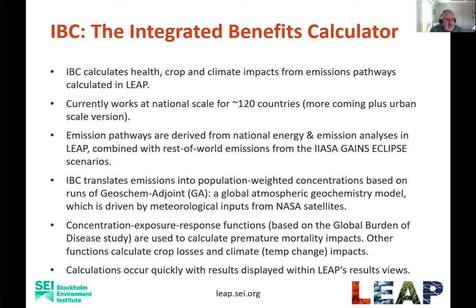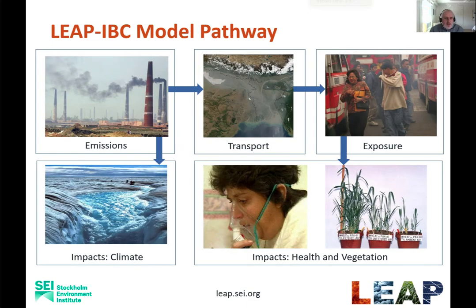One of the most exciting aspects of LEAP IBC is that it can take detailed science as embodied in the GeosChem-Adjoint model and the Global Burden of Disease relative risk functions, and make them much more broadly accessible to planners in developing countries. You can see the LEAP IBC modelling pathway visualised on this slide. The transport modelling takes the emissions from LEAP and calculates population-weighted concentrations based on the GeosChem-Adjoint modelling, and then health impacts are calculated based on the relative risk functions from the Global Burden of Disease study.